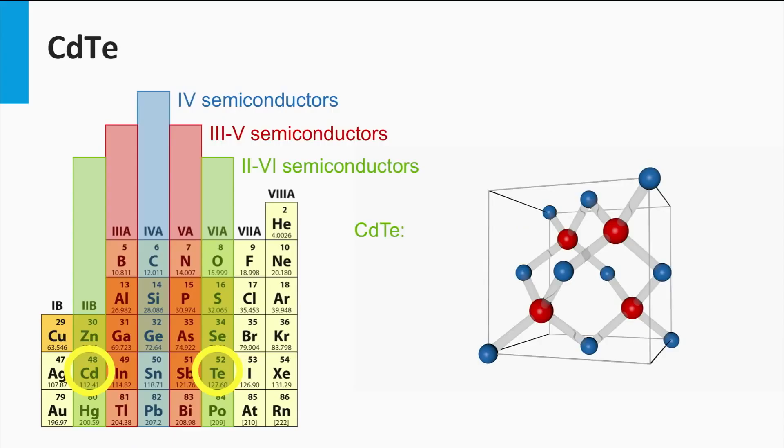This semiconductor material consists of the two valence electron element cadmium and the six valence element tellurium. Its network is a cubic tetrahedral lattice structure where every cadmium atom is bonded to a tellurium atom.